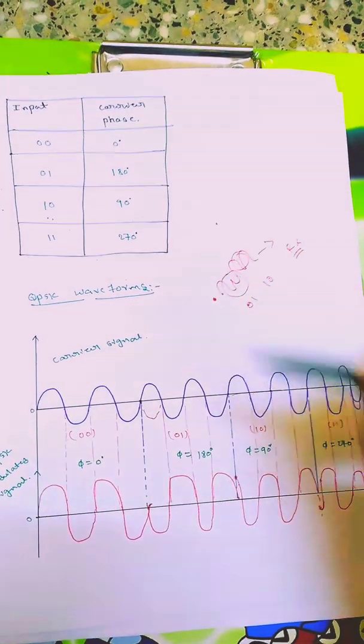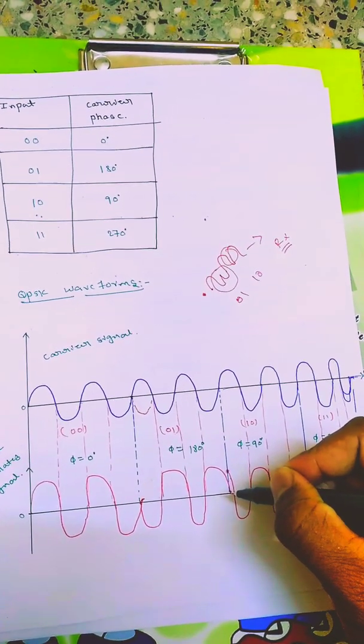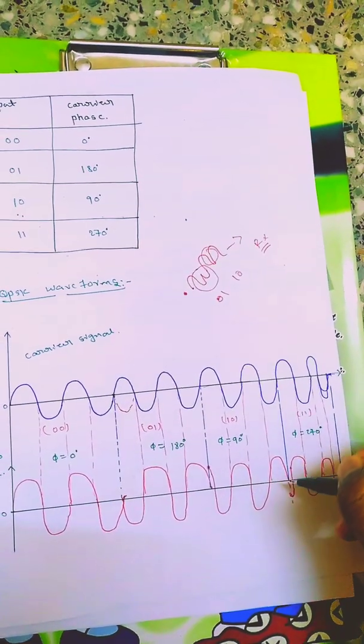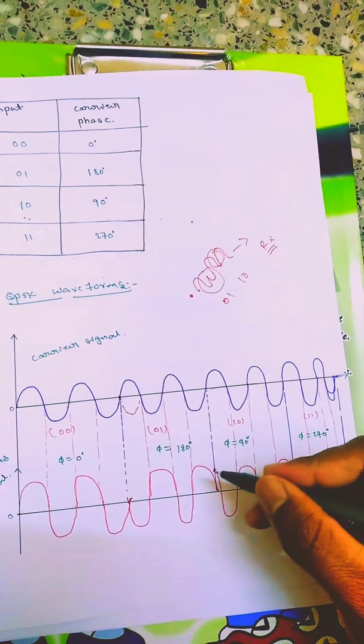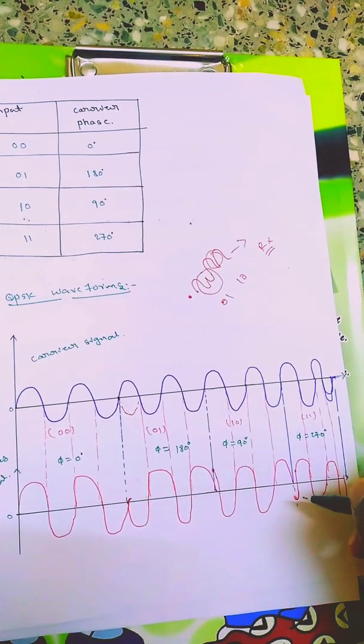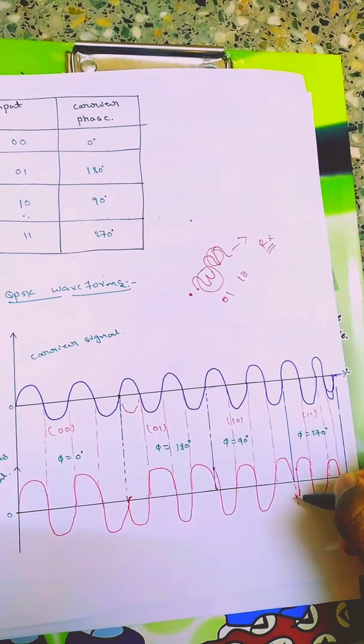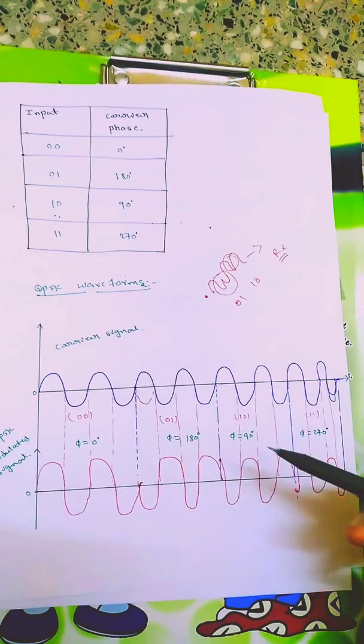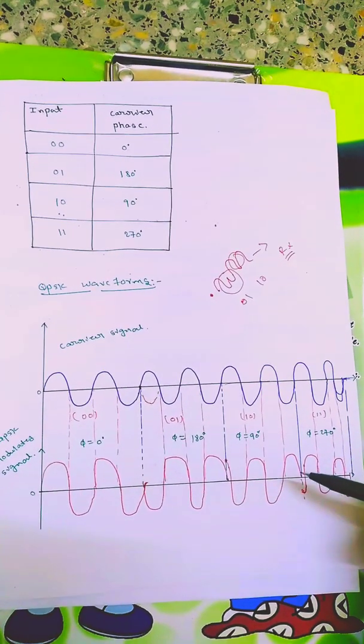For 10 there's a 90 degree phase shift. This is starting from here, so if I phase shift by 90 degree it will start from here. I'll draw for two cycles. Then for 11 the phase shift is 270. If 90 degree is here, 270 will be in the third quadrant, that is 270 will start from here. Like this I'll draw two cycles. This is how quadrature phase shift keyed signal or modulated signal will be drawn.